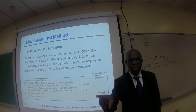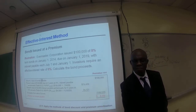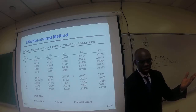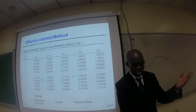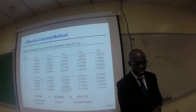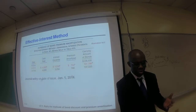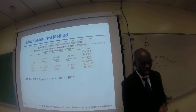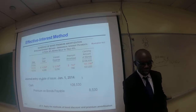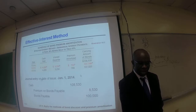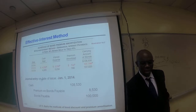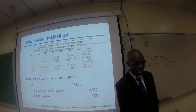So what do we do with that premium? We amortize it over the life of the bond using the effective interest method, just like we did for discount. Again, we use the present value table — the present value of the single sum and the present value of the interest payment. Add the two up and that gives you $108,530, which is the selling price of the bond. We make the journal entries: debit cash for $108,530, credit premium on bonds payable for $8,530, and credit bonds payable for $100,000 — just the opposite of a bond issued at discount.